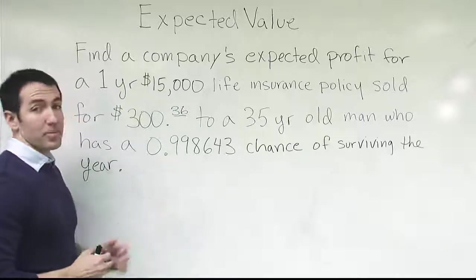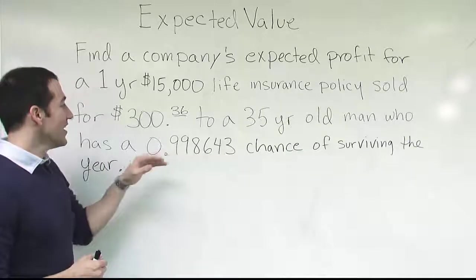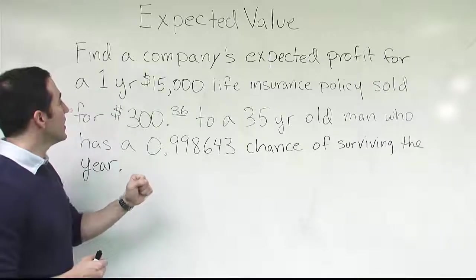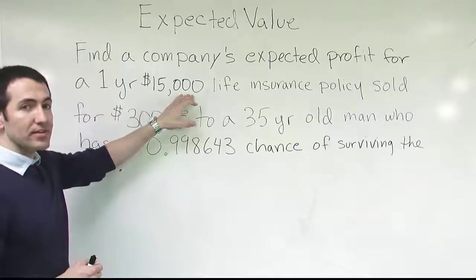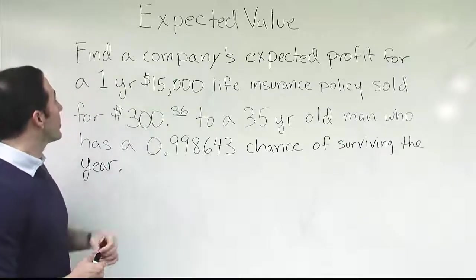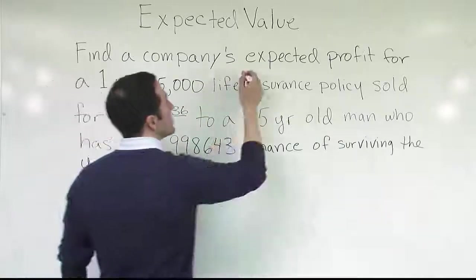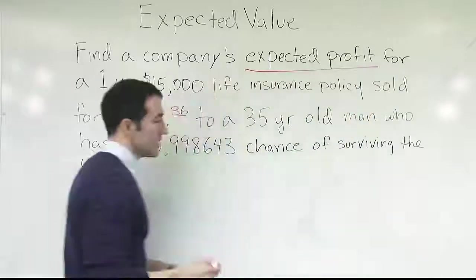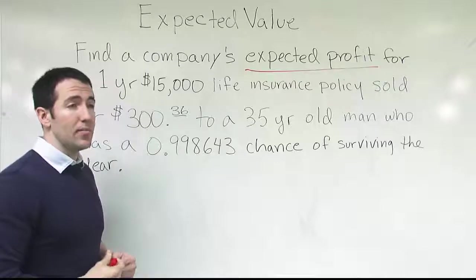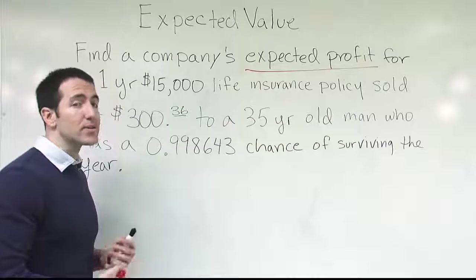It's a high probability that he'll make it to that next year — notice it's not 100%, though, something to think about. That's the probability that the person will survive a year. So if he buys a one-year life insurance policy worth $15,000, that means if he should die, his family will get a check for $15,000. We're asking what's the company's expected profit. How do you know it's an expected value problem? It'll say something like expected value, average value, average amount of money — something that conveys the idea of what's expected to occur, what's going to occur on average.